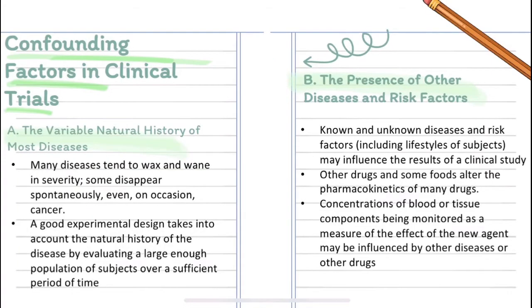The first confounding factor is the variable natural history of most diseases. Many diseases tend to wax and wane in severity, and some disappear spontaneously — even on occasion cancer. A good experimental design takes into account the natural history of the disease by evaluating a large enough population of subjects over a sufficient period of time.